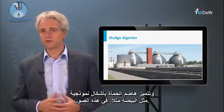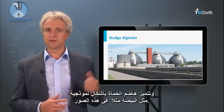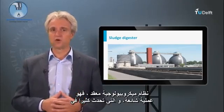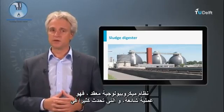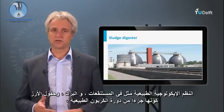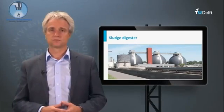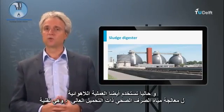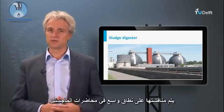Sludge digesters are characterized by typical forms, such as the X-shaped reactors shown in these pictures. Although anaerobic digestion is a rather complex microbial system, it is a very common process occurring in many natural ecosystems such as swamps, marshes, and rice fields, being part of the natural carbon cycle. The anaerobic process is also used for high-rate wastewater treatment.